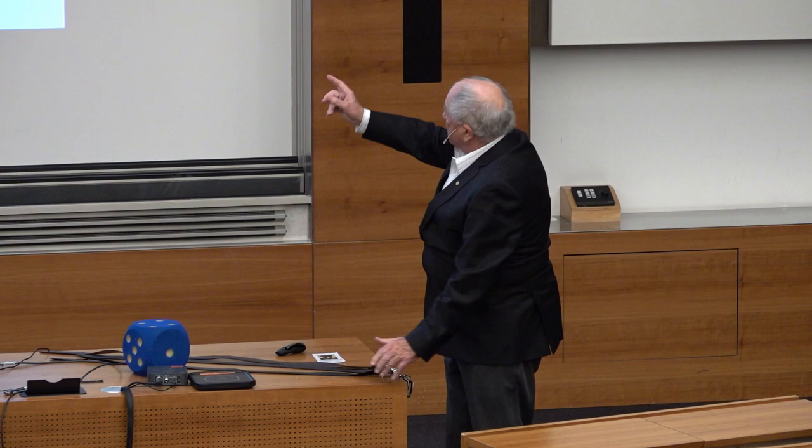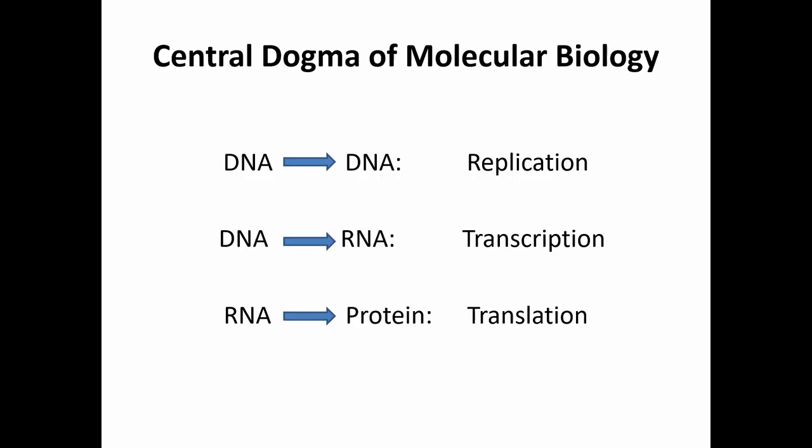There are also attempts to inject vaccines with DNA, which would then be transcribed to RNA and subsequently translated to protein. At this very moment, a company in India has applied for a license to produce a vaccine based on DNA rather than on messenger RNA.